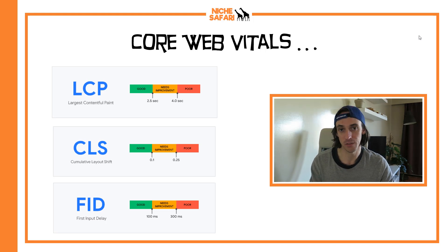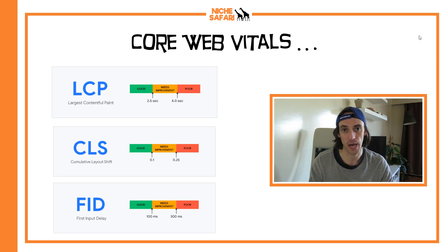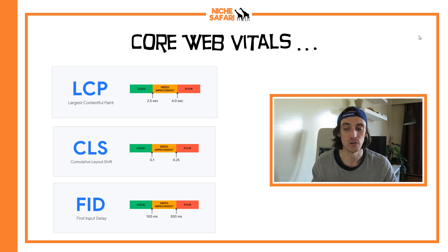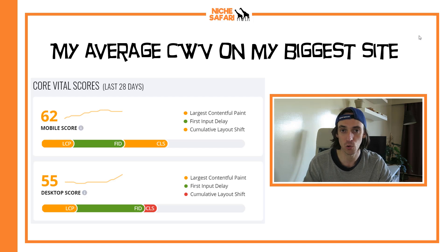The third thing they're looking at is First Input Delay. As far as I'm aware, it means how long it takes before people can interact with your website. They want it to be less than 100 milliseconds for green and less than 300 milliseconds for amber, and anything slower than that will be red, meaning it's poor.